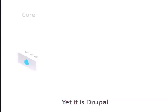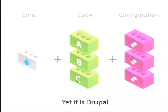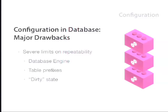A distribution consists of Drupal core, a set of modules, themes - what we call code - and configuration. What we are focusing on to call it a distribution is this last part: configuration. Configuration is hard to store; it's not natural to store in Drupal because traditionally configuration is stored in the database. The main obstacle is that when you are trying to ship something that contains configuration, you cannot conveniently ship configuration as a database dump.